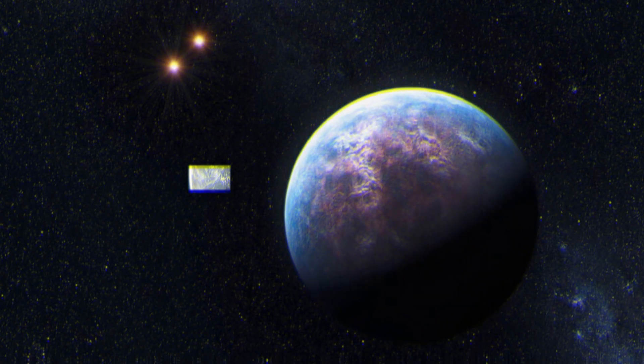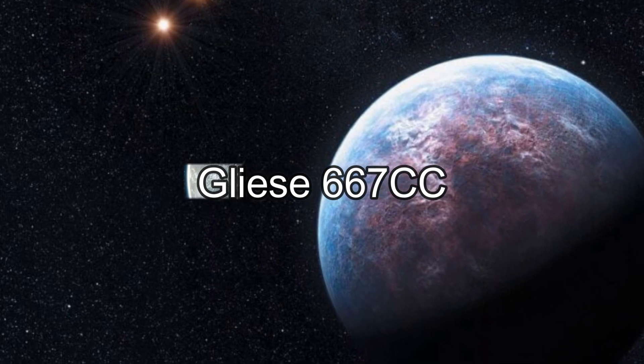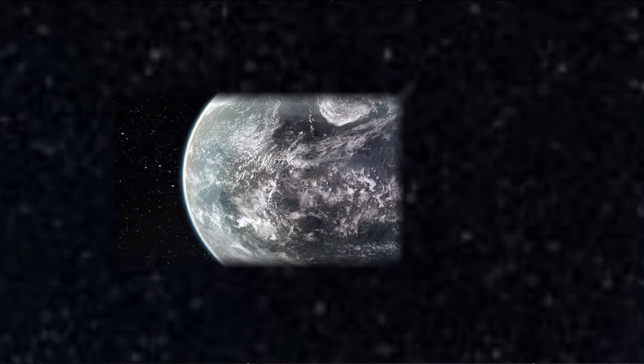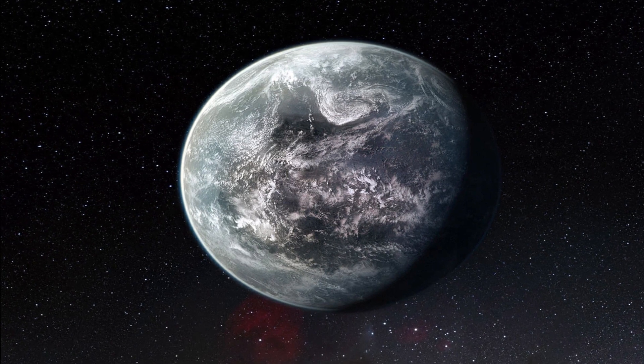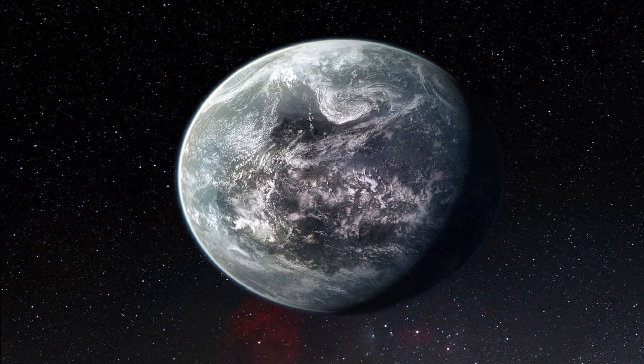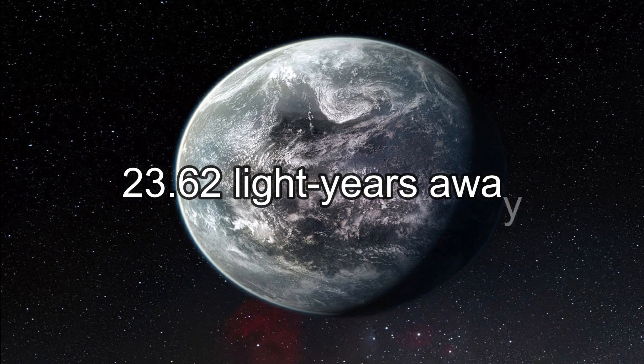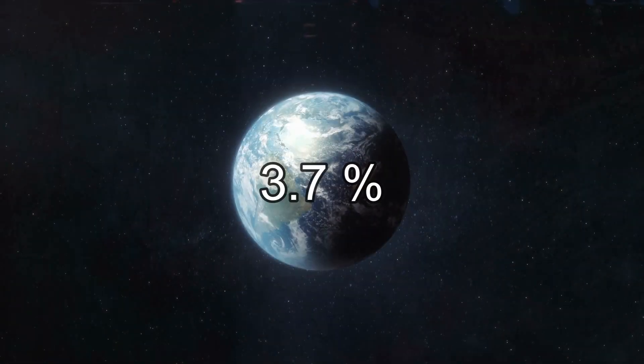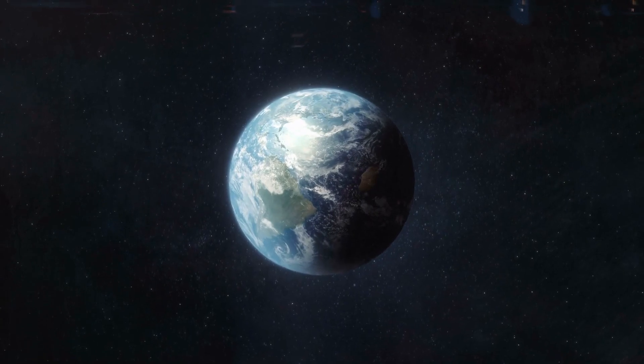Proxima b is followed by Gliese 667 cc, another nearby superhabitable planet that orbits a red dwarf star in the Gliese 667 triple star system. Gliese 667 cc is 23.62 light-years away and comprises 3.7% of the Earth's mass.